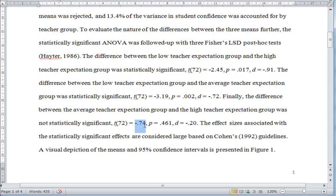And that's a T of negative 0.74, P 0.461, and a Cohen's D of negative 0.20.